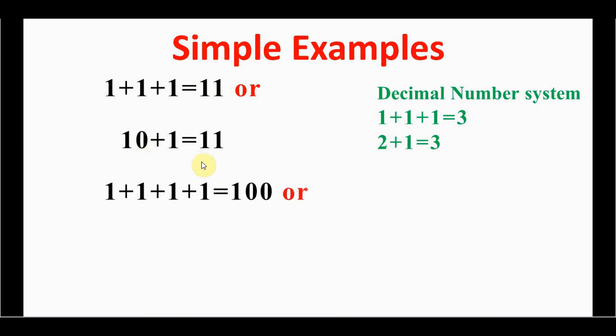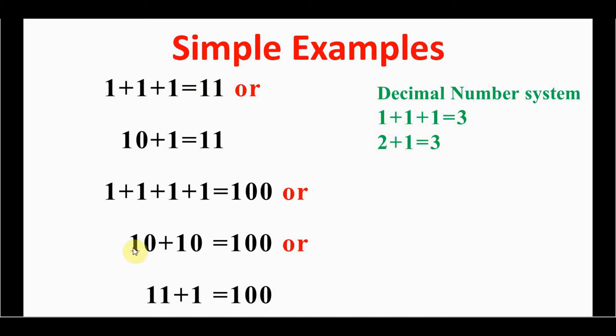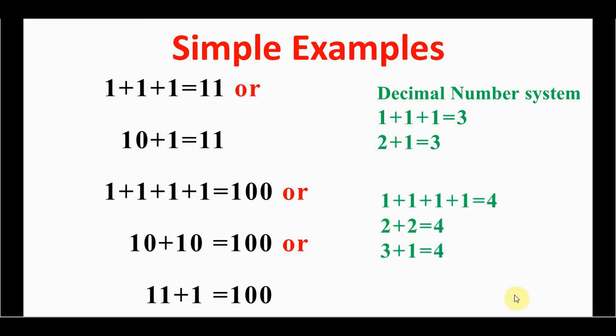Similarly, if you are adding four ones — or adding one-zero and one-zero plus one-one — you get one-double-zero (100) as the answer. The equivalent decimal representation for that result is also shown.